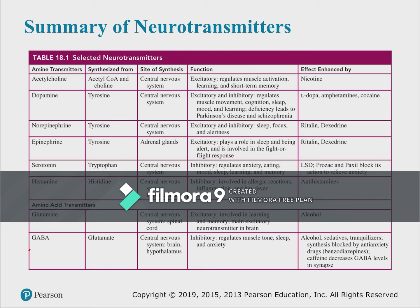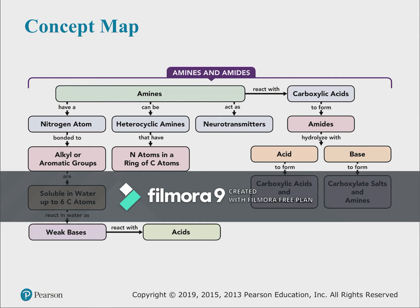To summarize the neurotransmitters: you should know what amino acids they're derived from, what functions they're involved in, and examples of their roles — such as GABA being inhibitory, glutamate being excitatory, acetylcholine for muscle contractions, dopamine for reward, serotonin for sleep, and so on. That covers Chapter 18; a Chapter 19 video will follow.